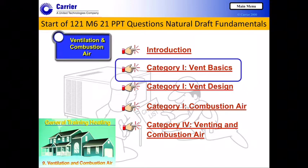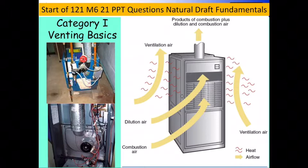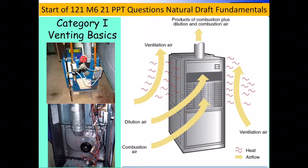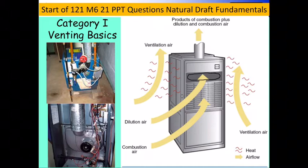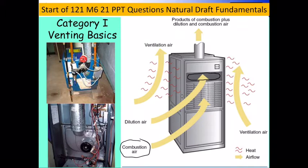Let's start talking about some natural draft fundamentals related to the basics of venting. We're going to focus primarily on category one type appliances. In the image to the right, I've identified certain types of air we have to deal with and compensate for. There is dilution air, which enters into the draft hood — shown here — which could be for a boiler or a furnace, any appliance where they're diluting the products.